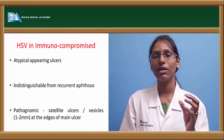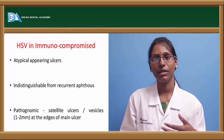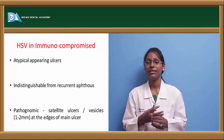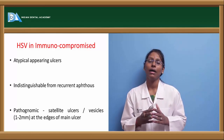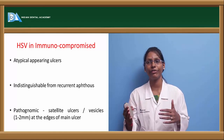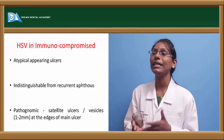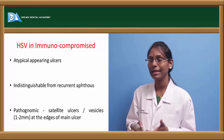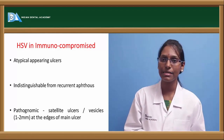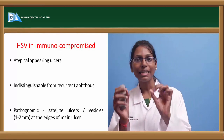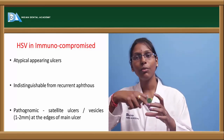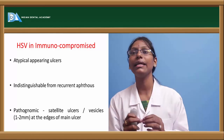The pathognomonic feature is that lesions will be seen along the side of the dermatome. HSV in immunocompromised patients presents as atypical ulcerating lesions that take an aggressive phase, and it is usually indistinguishable from recurrent aphthous stomatitis. The pathognomonic sign in immunocompromised HSV is satellite ulcers seen along the border of the main ulcer.